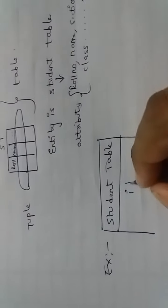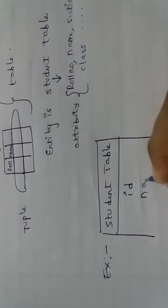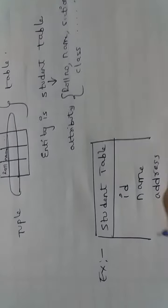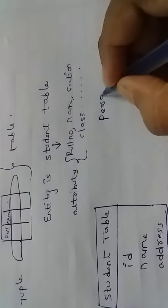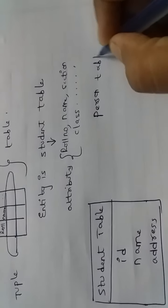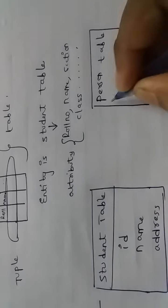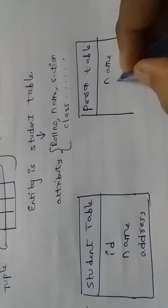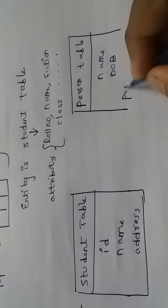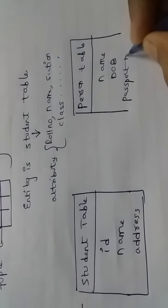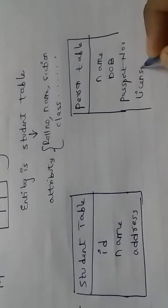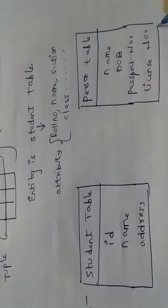For example, I am taking the student table. The student table contains ID, name, and address, and so on. I am also taking another table — the person table.